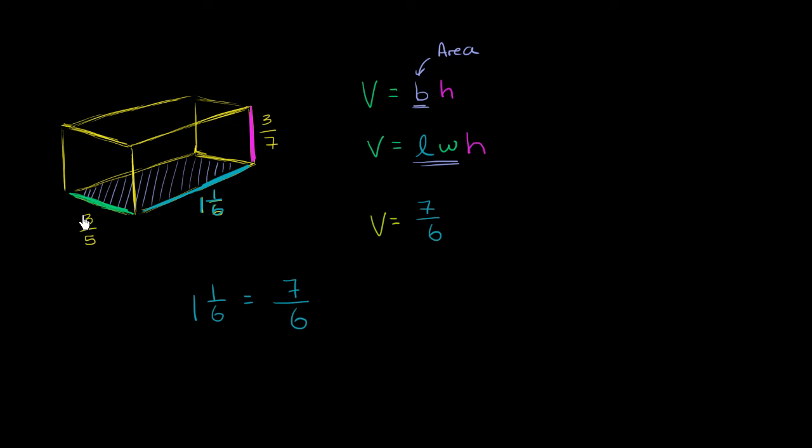Times 3 fifths, that's my width. So times 3 fifths times the height, which is 3 sevenths. Times the height, which is 3 sevenths. And we know when we multiply fractions, we can multiply the numerators. So it's going to be 7 times 3 times 3. And the denominator, we can just multiply the denominators. So it's going to be 6 times 5 times 7.